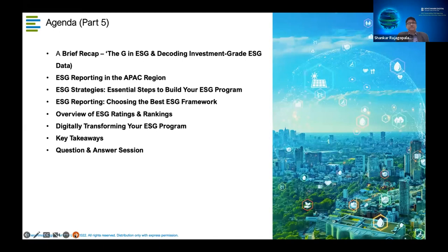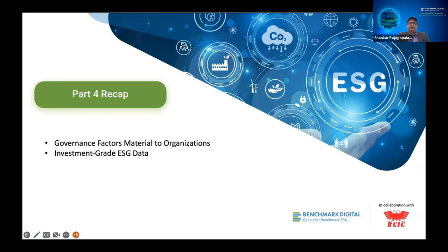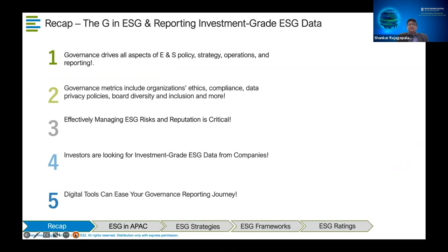A recap on what we did last time: we looked at demystifying the G — governance — which is the ultimate bottom line. It all begins with total commitment at the top; the tone at the top is what drives organizations. Governance drives policies, strategy, operations, mission, and values. It also covers ethics, compliance, data privacy, board diversity, board independence, and inclusion. The SEBI in India has also stated expectations on managing ESG risk specifically.